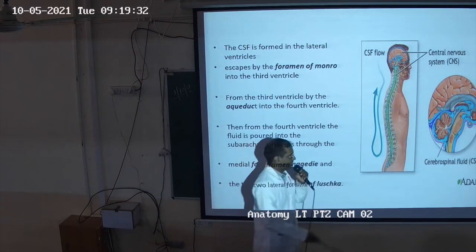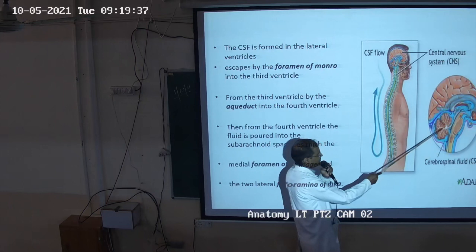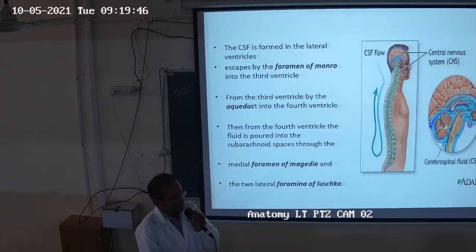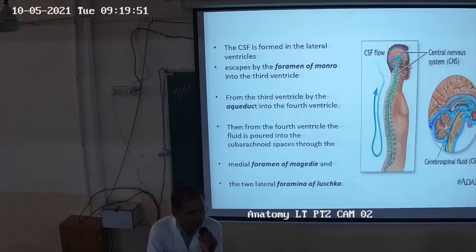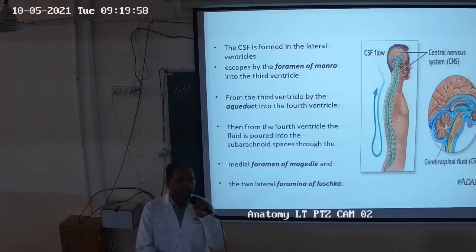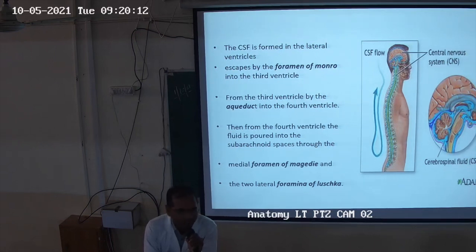The foramen of Magendie is the medial foramen. There are two lateral foramina — the foramina of Luschka — one on each side. Through the foramen of Magendie, CSF enters the subarachnoid space inferiorly towards the spinal cord. Through the foramina of Luschka, CSF supplies the lateral parts of the brain.